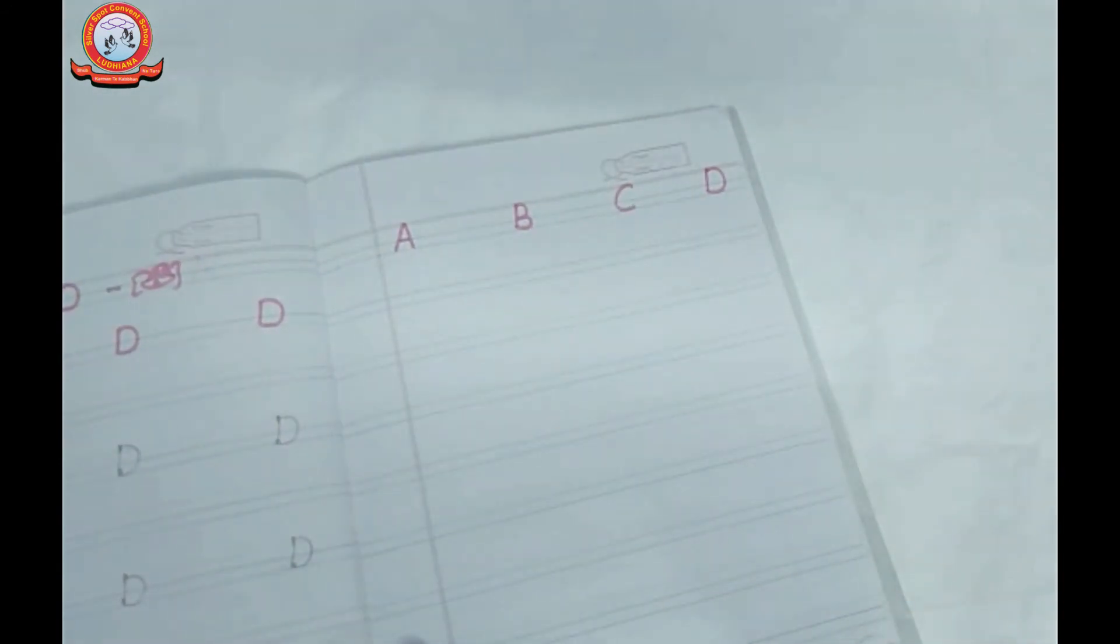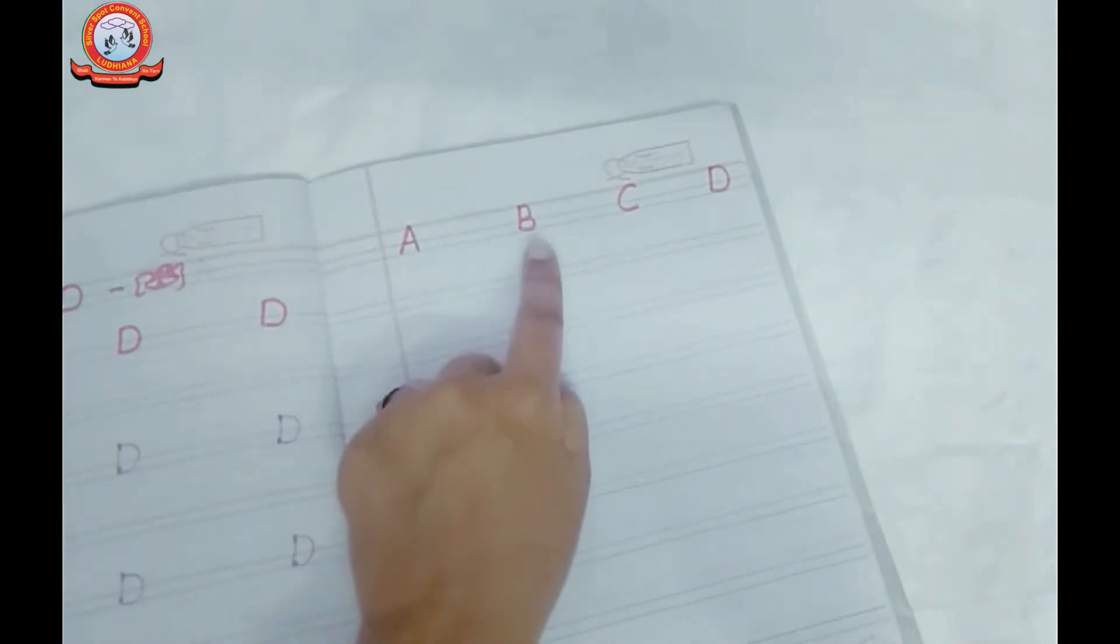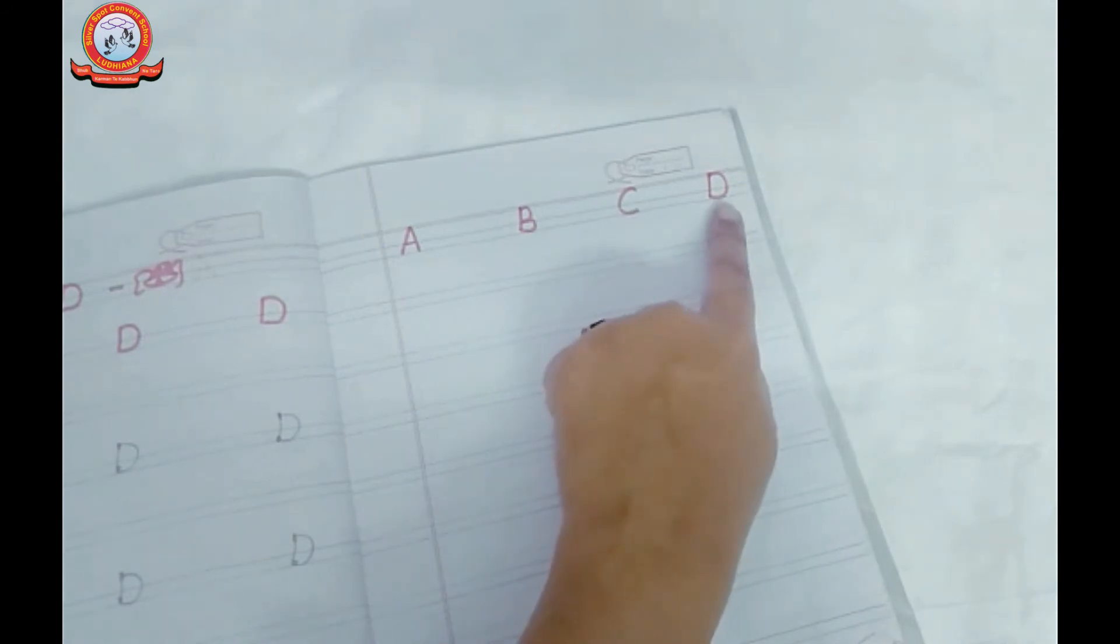अब यह हमने line यहाँ पर complete करनी है. और बोल बोल के. A, B, C, and D. Okay? Write three pages every day. Okay? Bye!